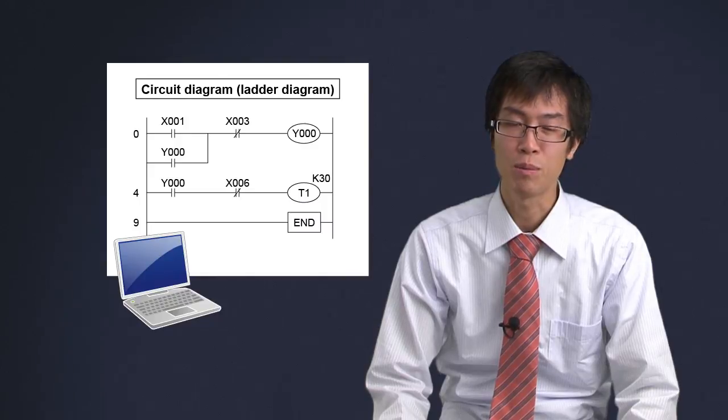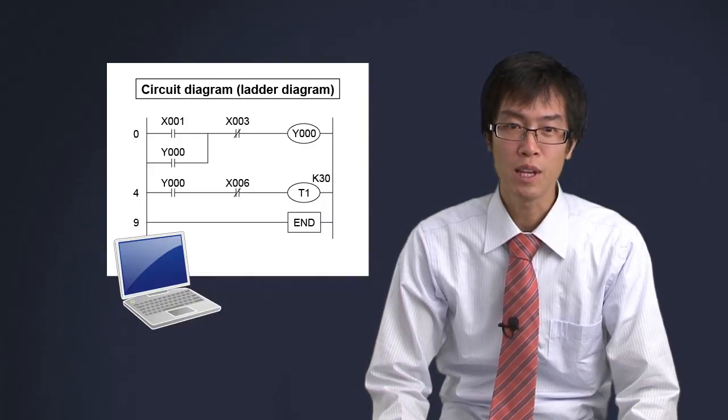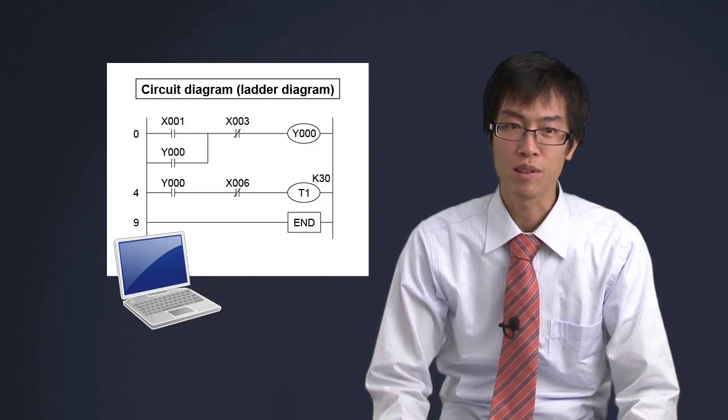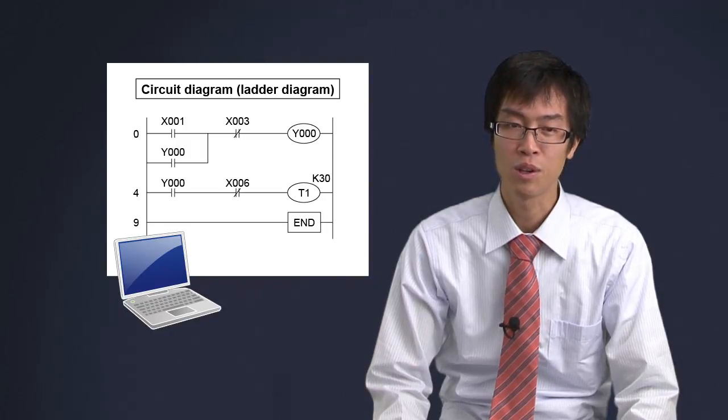There are two basic programming methods. We have already introduced one: the ladder program. We call it a ladder program because the two vertical rails and the series of horizontal rungs resemble a ladder.